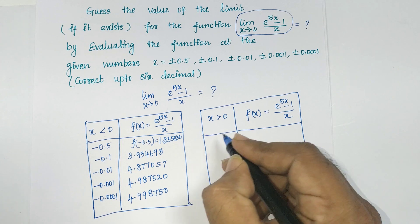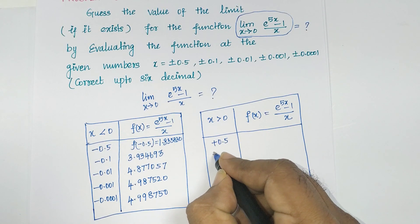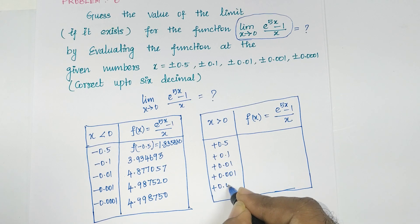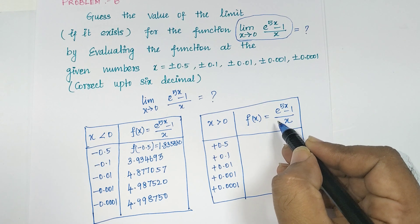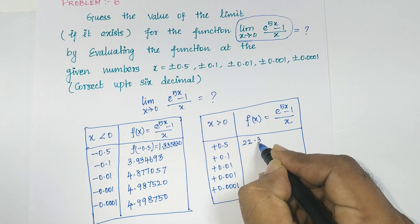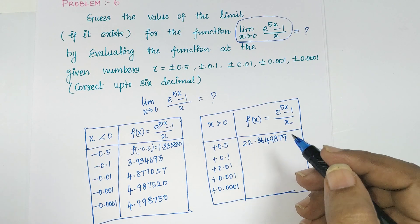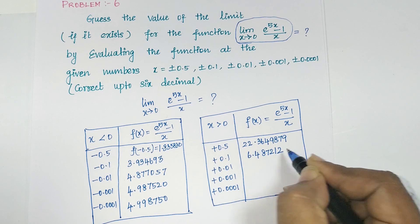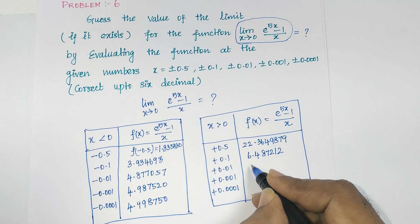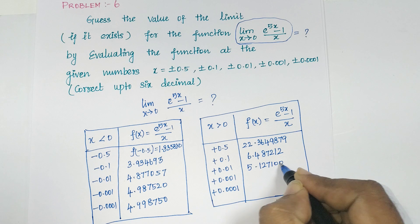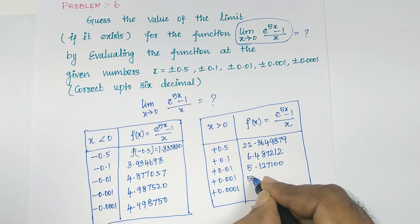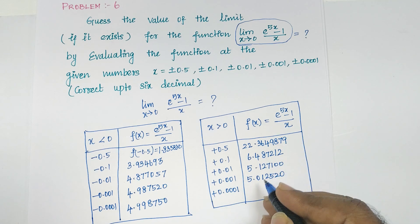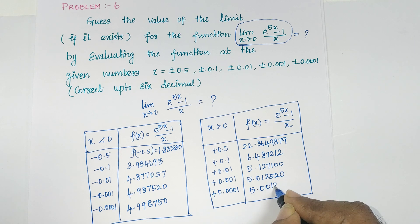Now I am going to substitute the right-hand side positive terms: plus 0.5, plus 0.1, plus 0.01, plus 0.001, and plus 0.0001. When substituting x equal to 0.5 in the function, I will get 22.364987. When substituting 0.1, we get 6.487212. Substituting 0.01 gives 5.012520. And for the final point 0.0001, we will get 5.001250.